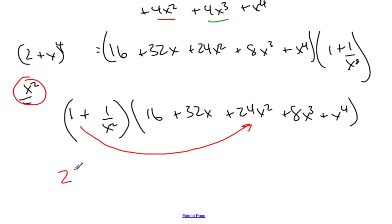And so one part of my x^2 is 24x^2. If I think about it, I'll have to multiply 1/x^2 times all these values too. This will be 16/x^2, 32/x, just 24.